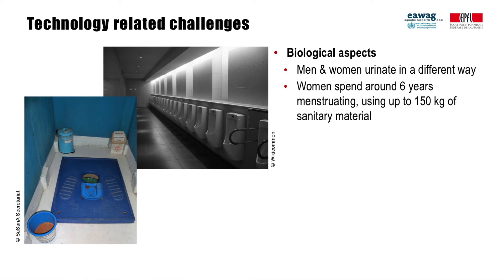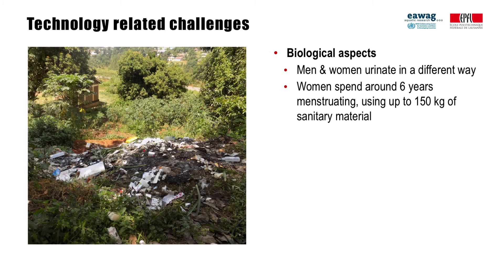Focusing on biological aspects, it is obvious that men and women follow different practices, encounter various challenges and have different needs and priorities when it comes to sanitation. As an example, men urinate in a different way than women, and women spend around six years menstruating in their lives. On average, each woman will dispose of 125 to 150 kilograms of sanitary material in her lifetime. In the developing world, many end up in waterways, open dumps or are littering communities.